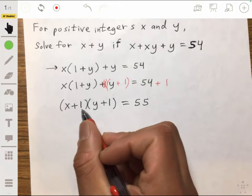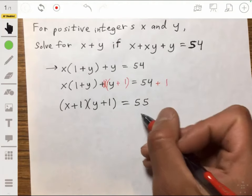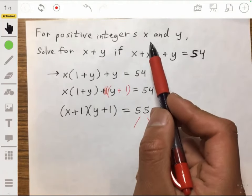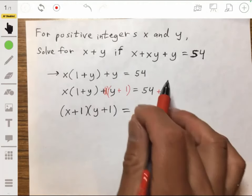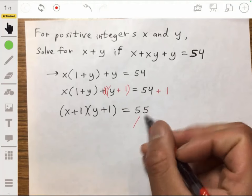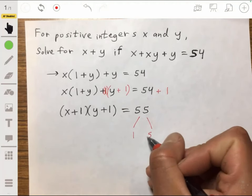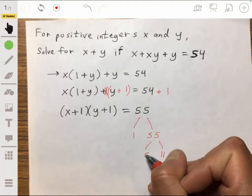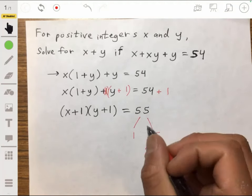And then we really just have two factors that multiply to 55. And since we're told that they have to be positive integers, then we know that we're basically looking for factors of 1 and 55, or like 5 and 11, because those are the only positive integers that will multiply to get 55.